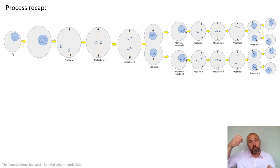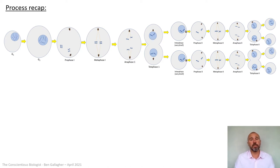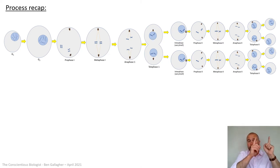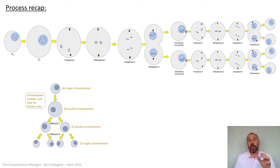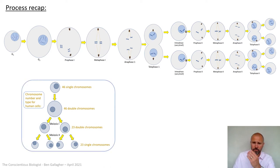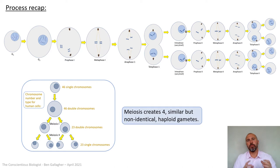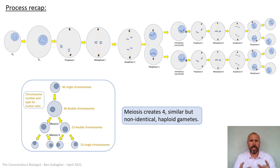You do that for all 23 homologous pairs. In metaphase one they move to the middle via spindle fibers. In anaphase one, each homologous pair is broken into its double chromosomes and pulled to opposite ends. In telophase one, they're repackaged and split into two cells. Each of those two cells then effectively does mitosis to split the double chromosomes into single chromosomes, ending up with four cells. Those four cells are each haploid, containing only 23 single chromosomes - exactly half of what we started with at G1.